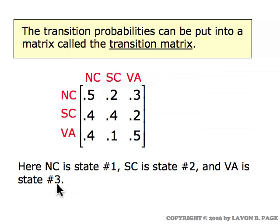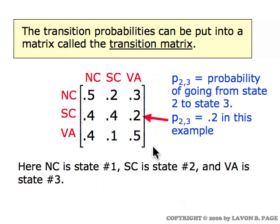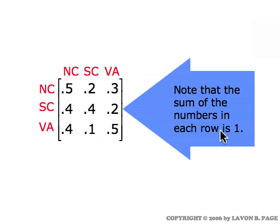The ordering I've chosen is North Carolina as state one, South Carolina as state two, and Virginia as state three. It makes absolutely no difference as long as you're consistent. Using this ordering, the second row, third column entry in the matrix represents the probability going from state two to state three — South Carolina to Virginia — which in this example is .2. One thing to notice is that all the rows add up to one, basically because every truck has to go somewhere. The probabilities of going to North Carolina, South Carolina, and Virginia have to add up to one because those are all the possible places it can go.